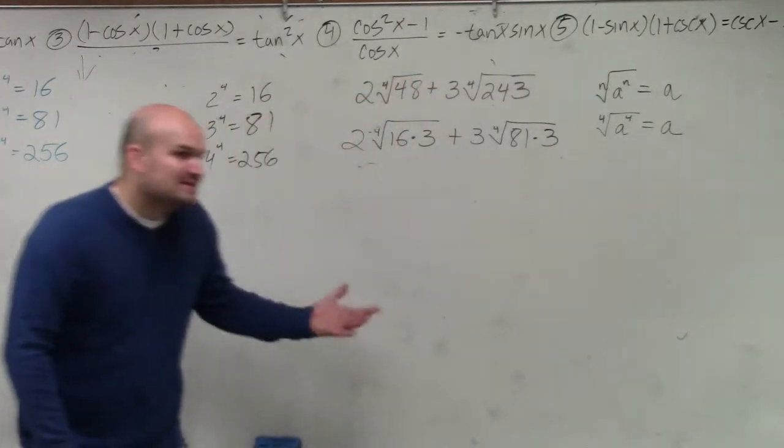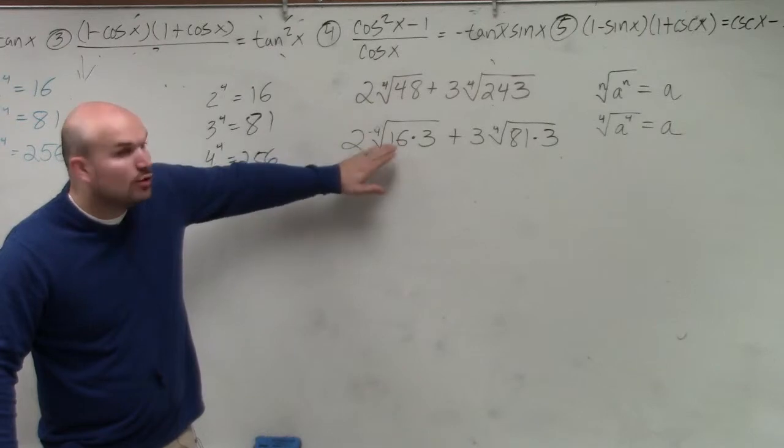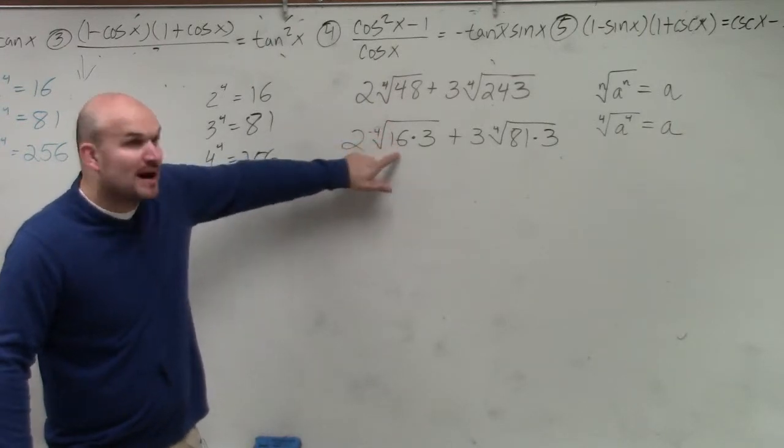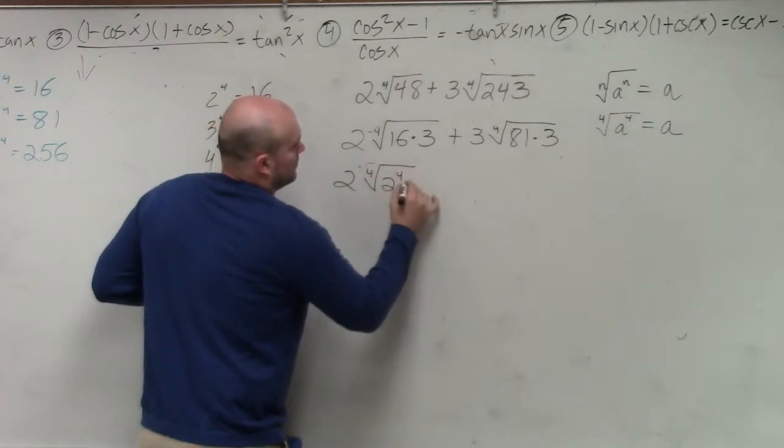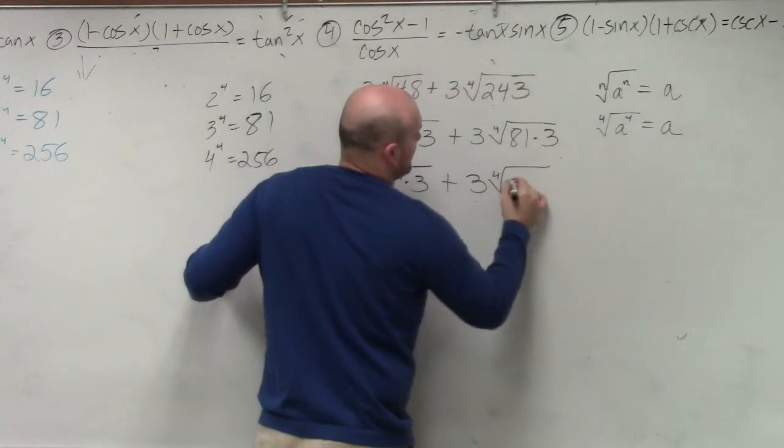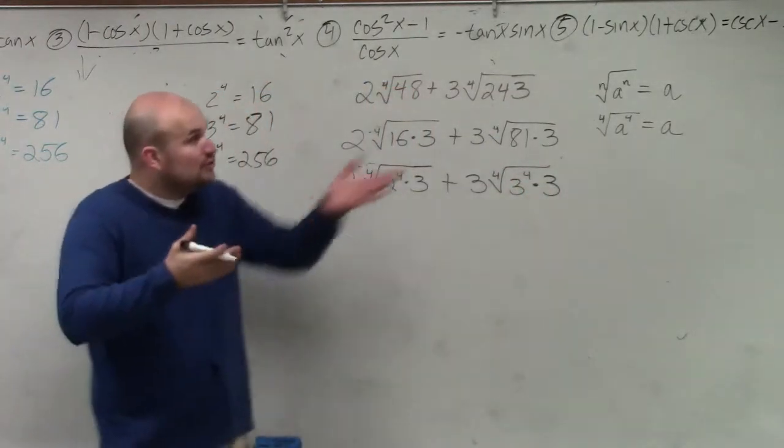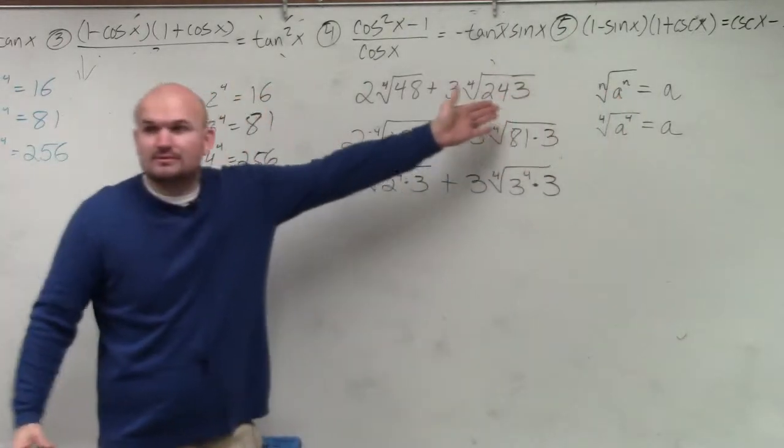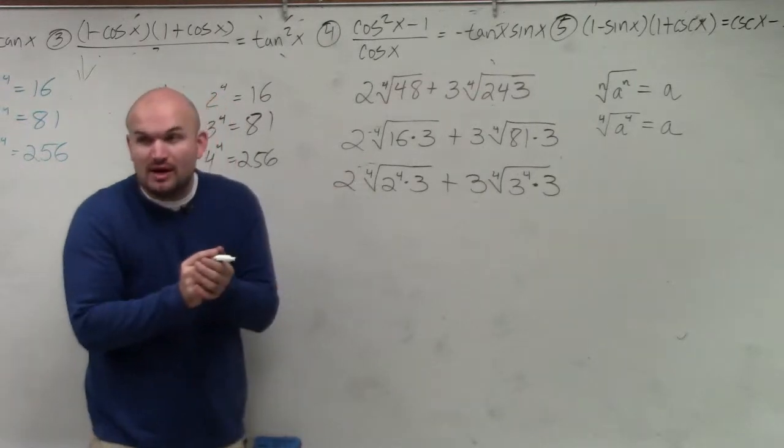So what's nice about these types of problems is this is a quartic number. We can raise this number to the fourth power. It's 2 to the fourth power times 3 plus 3 fourth power of 3 to the fourth power times 3. So using our identity element, Kyle, 4,